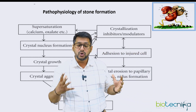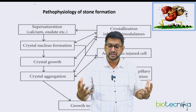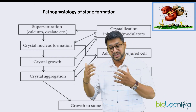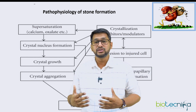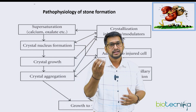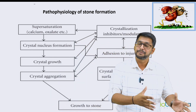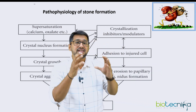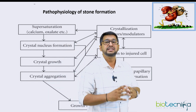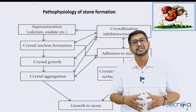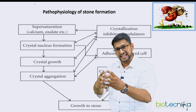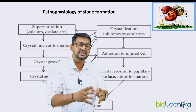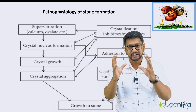How exactly is the stone formed? The stone could be formed in two different approaches. First, there might be crystallization of certain salts, which can lead to addition on an injured cell and finally develop into a stone. Or there is the supersaturation approach, wherein a crystal nucleus is formed, and this crystal nucleus leads to crystal growth. This crystal growth then comes together to form crystal aggregation, which finally leads to the development of the stone.